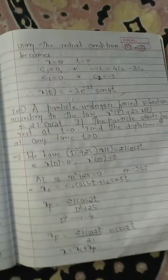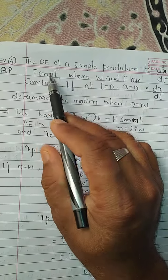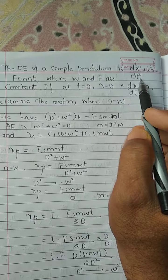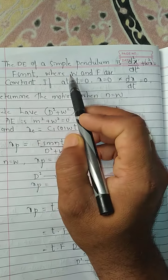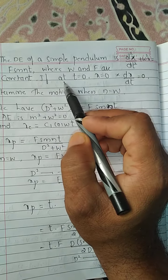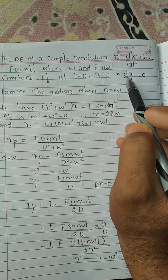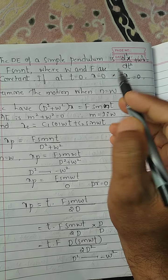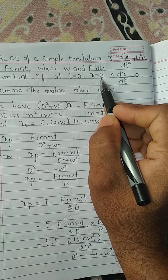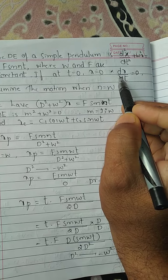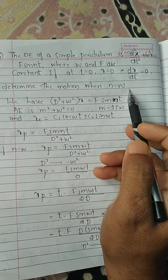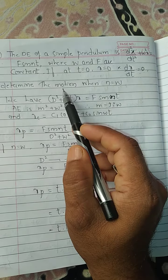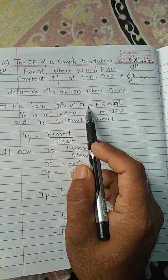Now let us discuss example 4 from the notes: the differential equation of a simple pendulum is d²x/dt² + ω²x = f sin(nt), which is a non-homogeneous differential equation, where f and ω are constants. The initial conditions are: at t = 0, x = 0, and dx/dt = 0. Determine the motion when n = ω.